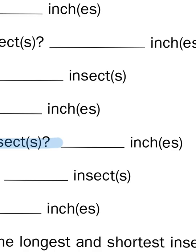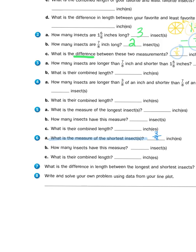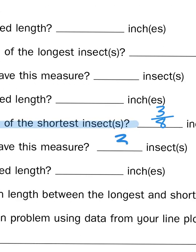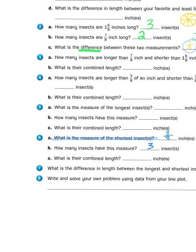The second part of that question asks how many insects have this measure? Well, there were three of them. And what is their combined length? Now, combined is another word that tells us to add, to combine, put together.